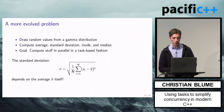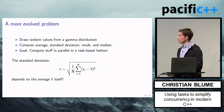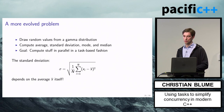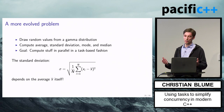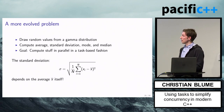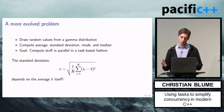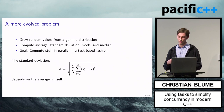Let's look at a slightly more evolved, real-world problem. We want to generate random values from a gamma distribution and compute statistical key measures: average, standard deviation, mode, and median. The standard deviation depends on the average — it's the mean deviation across the average — so we want to model it such that we compute the average first and then the standard deviation. There will be a dependency. Let's see what this looks like as a graph of tasks.